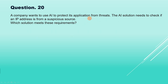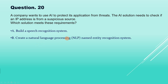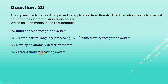Now question number 20. A company wants to use AI to protect its application from threats. The AI solution needs to check if an IP address is from a suspicious source. Options: A, build a speech recognition system; B, create a natural language processing named entity recognition system; C, develop an anomaly detection system. The correct answer is option C: develop an anomaly detection system, because it is designed to identify unusual patterns or behavior within data, helping to find suspicious sources.